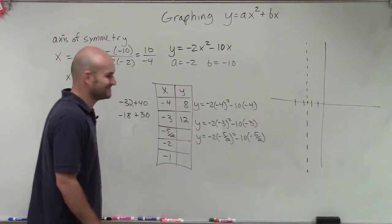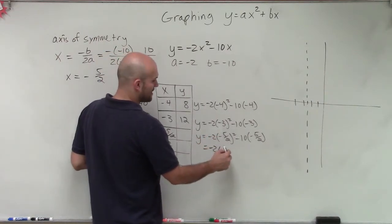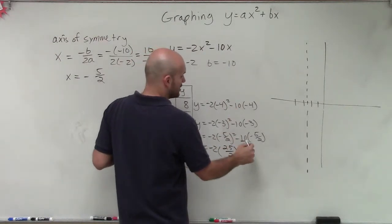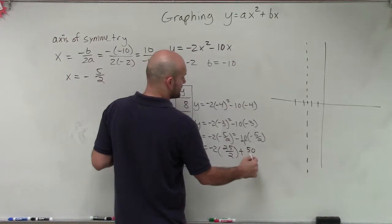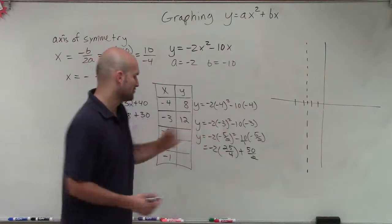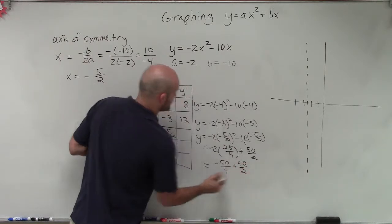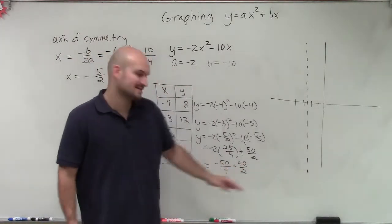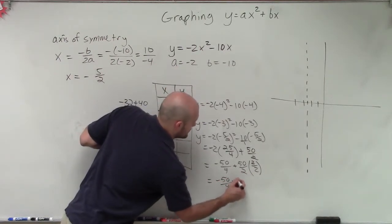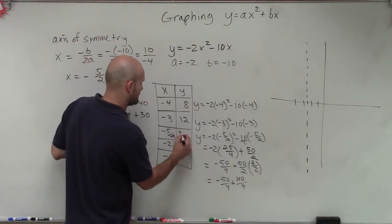Now let's compute the vertex at x equals negative 5 halves. y equals negative 2 times negative 5 halves squared minus 10 times negative 5 halves. Negative 5 halves squared is 25 over 4. So we have negative 2 times 25 over 4, which gives negative 50 over 4, plus 10 times 5 halves, which is 50 over 2. Converting 50 over 2 to 100 over 4, we add negative 50 plus 100 over 4, giving us 50 over 4.